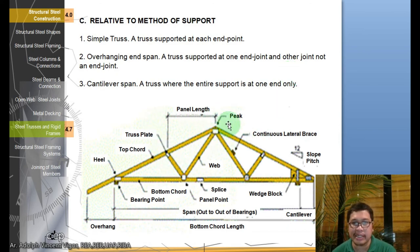This is your panel length, this is the peak, this is the truss plate, this is the top chord, this is the bottom chord, these are what you call the splices. The splices happen when you connect two members. You have here the web and the continuous lateral brace. Then this is the span, your overhang, this is the length of the bottom chord here.